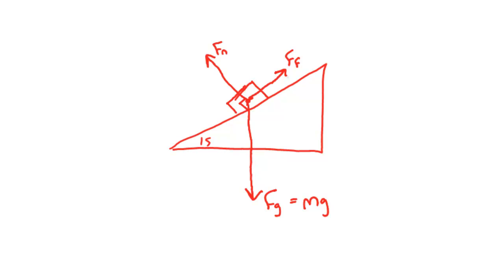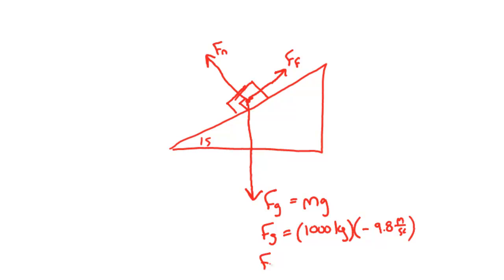We're going to resolve the force of gravity first. The force of gravity equals the mass, which is 1,000 kilograms, multiplied by the acceleration due to gravity, negative 9.8 meters per second squared. This gives us an Fg of negative 98,000 newtons.